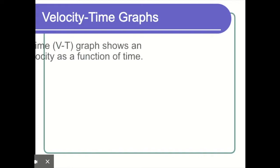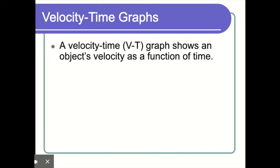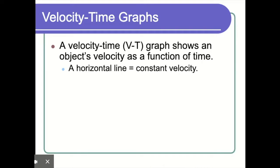We're going to get started with our velocity-time graph notes. The first thing we want to talk about is: what is a velocity-time graph? A velocity-time graph shows an object's velocity as a function of time — it's just a regular graph. On our graph we're going to have a y-axis and x-axis just like before. Our y-axis is going to have velocity and our x-axis is going to have time.